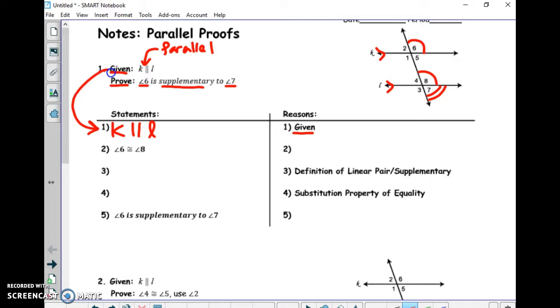Those are called corresponding angles. Remember that from yesterday? If one's out, one's in. Guess what the reason for these being congruent is? They are corresponding angles. We are using what we should know about angle relationships in this proof.